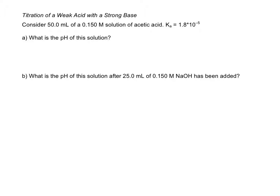Now we're going to do the same thing but with a weak acid and a strong base. We have 50 milliliters of a 0.150 molar solution of acetic acid, and the Ka for acetic acid is 1.8 × 10⁻⁵.